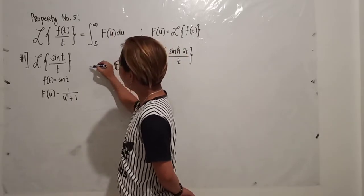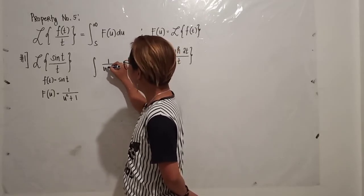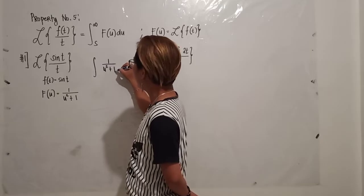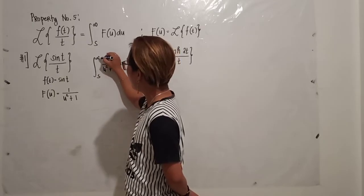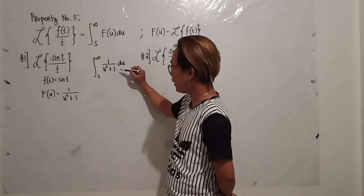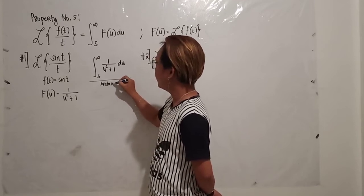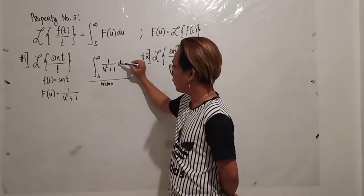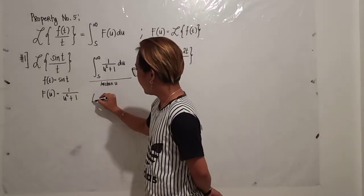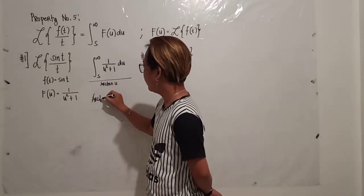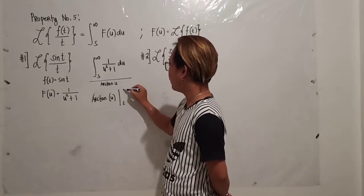Then following your formula, you will now have the integral of 1 over u squared plus 1, with the limit from s to infinity. In this case, this is in the form of arctan. So the integral of 1 over u squared plus 1 is arctan of u. You will have your arctan of u, with limits from s to infinity.